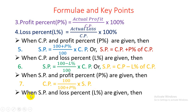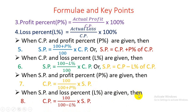When SP and loss percent (L%) are given, then CP = [100 / (100 − L%)] × SP.